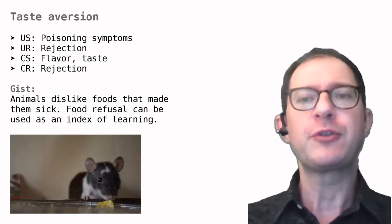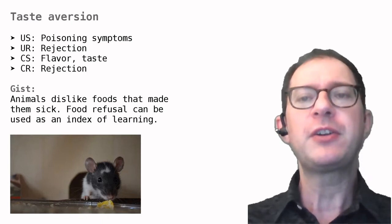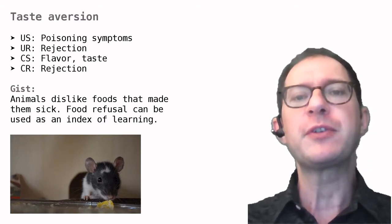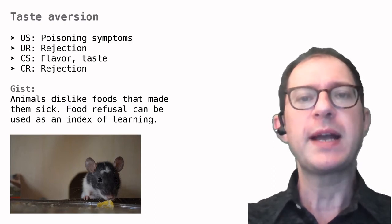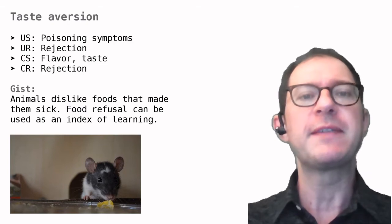Let's move on to taste aversion learning. This is exactly what it sounds. An animal can learn an aversion to food with a specific taste if it feels sick after eating it. As a result of the aversion the animal will avoid eating the food. This is what happens to us when we get food poisoning and then we feel disgusted by the food that gave us the poisoning.